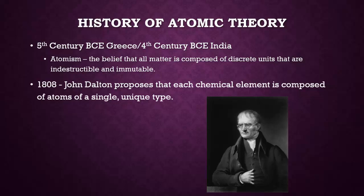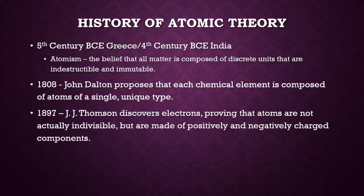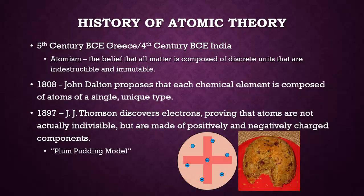In 1808, John Dalton proposes that each chemical element is composed of atoms of a single unique type. Almost 90 years later, J.J. Thomson discovers the electron, proving that atoms are not actually indivisible, but are made of positively and negatively charged components. This is often referred to as the Plum-Pudding model.